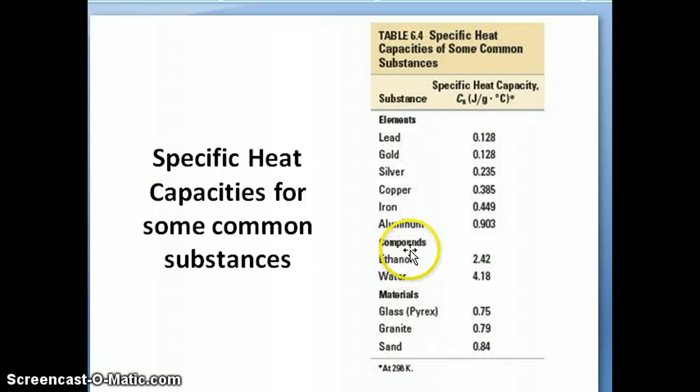Compare this to things like ethanol and water, for example, water specifically. It takes about four joules of energy to increase the temperature of one gram of water by one degree Celsius. If you look at something like gold, it takes only 0.1. So there's about a factor of 40 to increase the temperature of water. One gram of water by one degree Celsius. So it takes about 40 times more energy to increase the temperature of water.